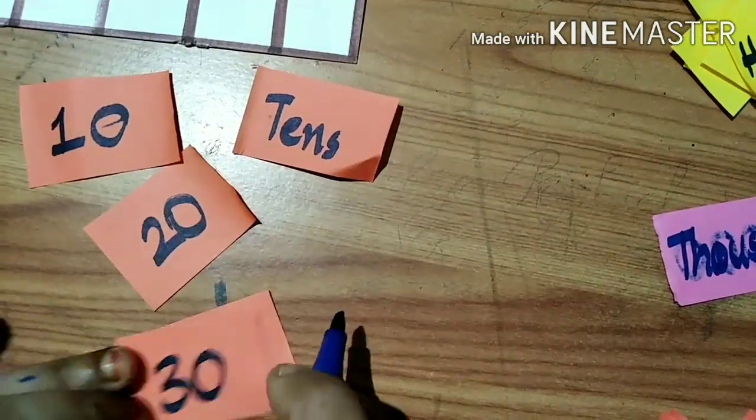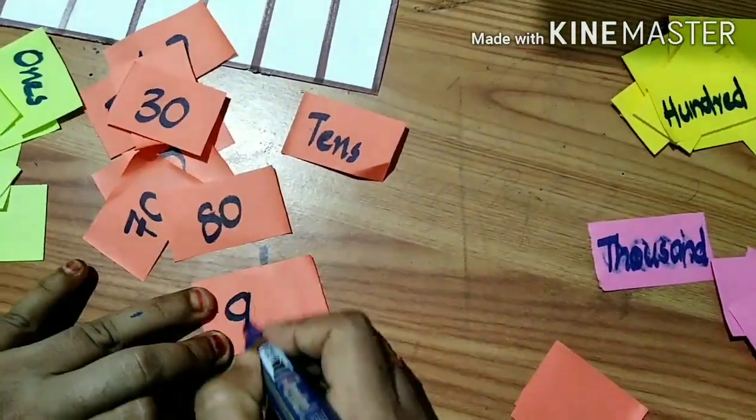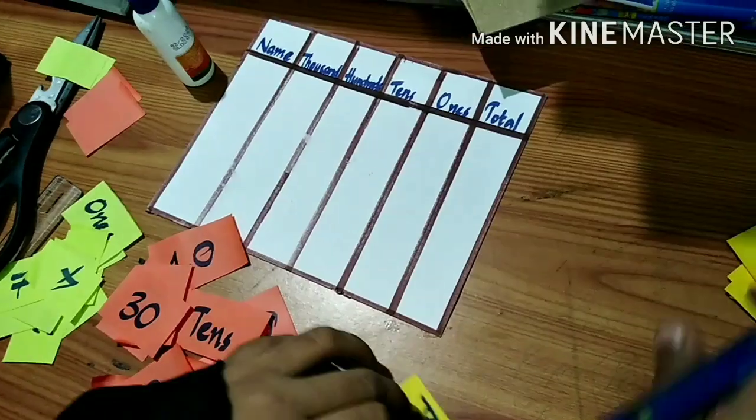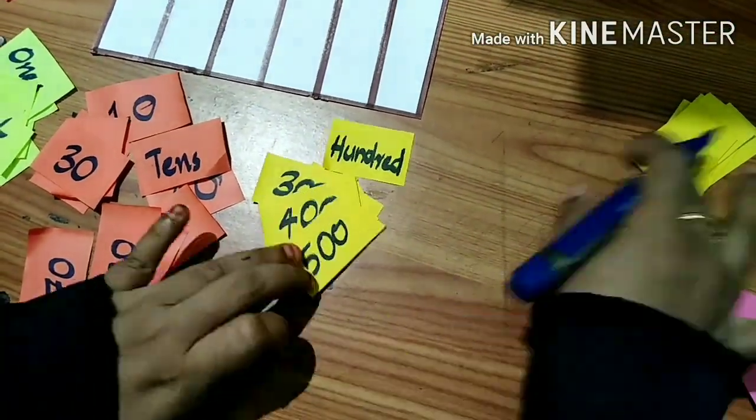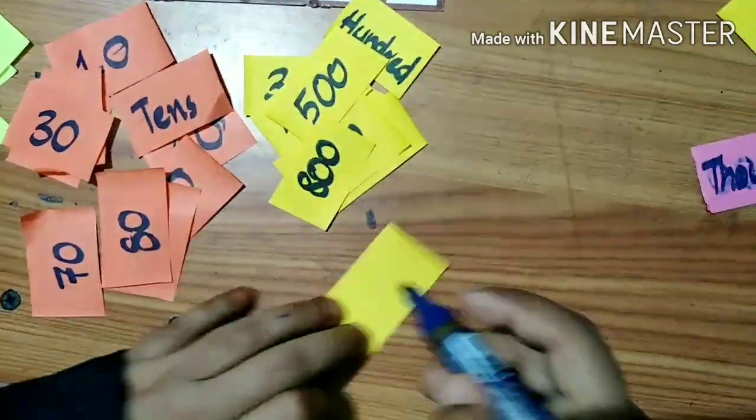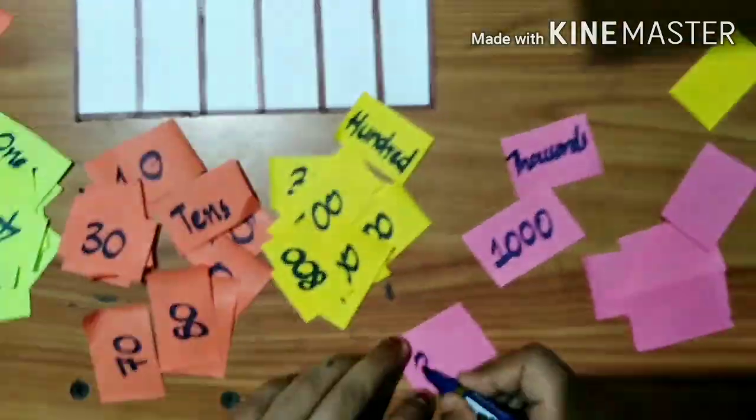Now take one color strip and write from one to nine. Take the tens colored paper strip and write from ten to ninety. Then take the hundreds colored paper strips and write from one hundred to nine hundred. Then take the thousands colored paper strip and write from one thousand to nine thousand.